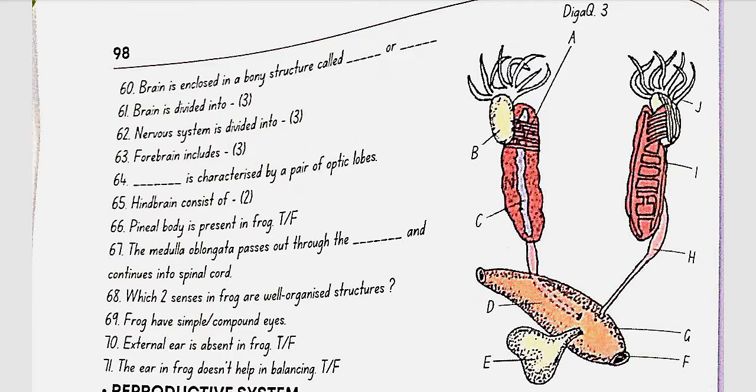Midbrain is characterized by a pair of optic lobes. Hindbrain consists of cerebellum and medulla oblongata. Pineal body is present in frog. Yes, true. The medulla oblongata passes out through the foramen magnum and continues into the spinal cord.